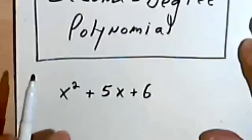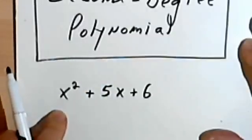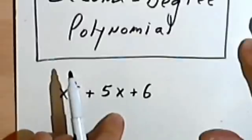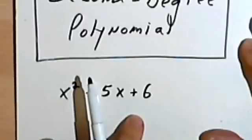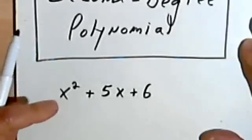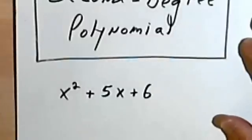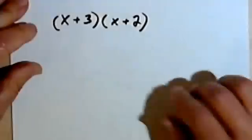So what I want to do is start by reviewing where things like this come from. In other words, how we do a multiplication problem to end up with something like this. And then when we factor, factoring is basically going to be working backwards to get to the multiplication problem that we started with. Okay, so let's start with this.